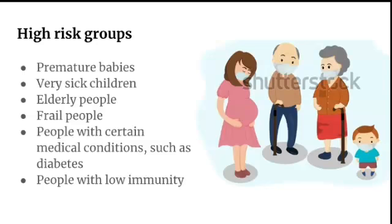High-risk groups who have a greater chance of getting HAI include premature babies, very sick children, elderly people, frail or weak people, people with certain medical conditions like diabetes, and immunocompromised patients such as those with HIV or undergoing chemotherapy. When caring for these high-risk patients, you must be more careful not to introduce any new infection.